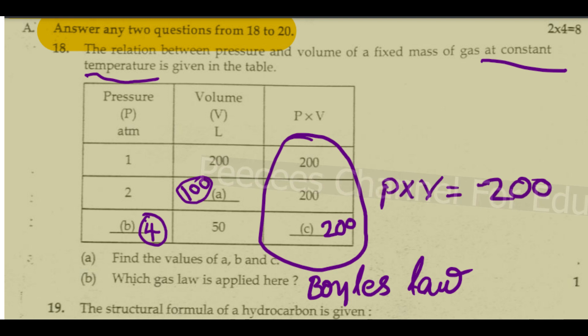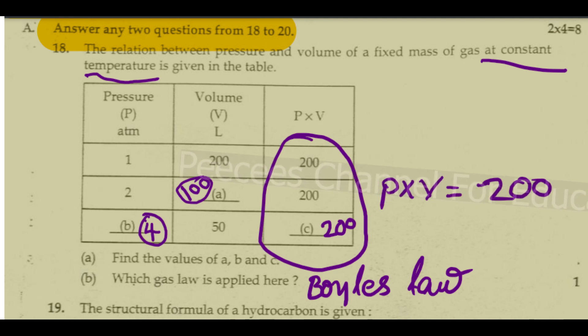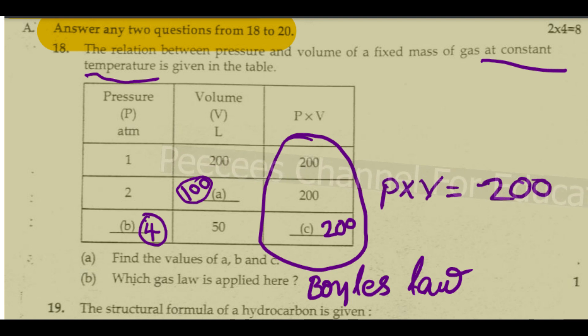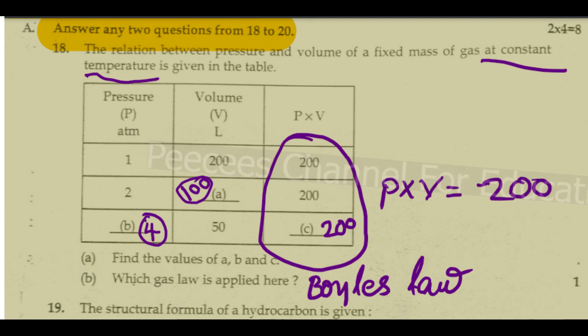19th question: The relation between pressure and volume of a fixed mass of gas at constant temperature is given in the table. At constant temperature we can do P × V. The pressure is 1, volume is 200. B: 4 × 50 = 200. Which gas law is applied here? Here it is Boyle's Law.